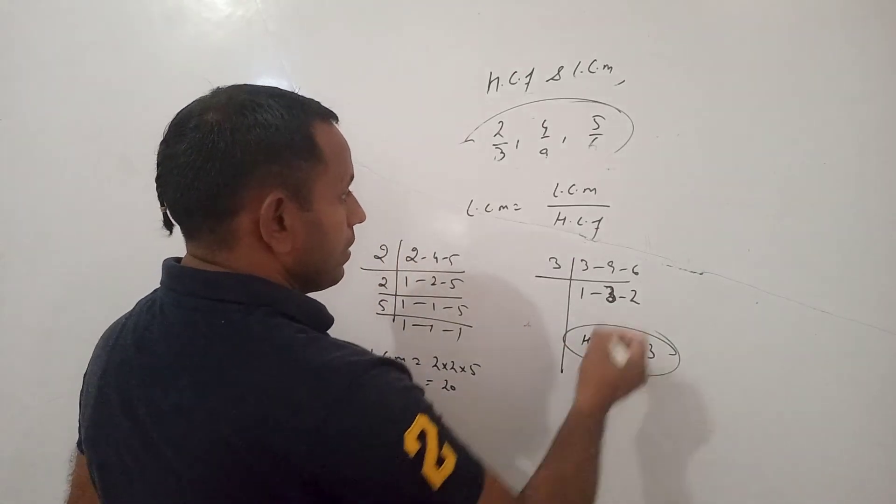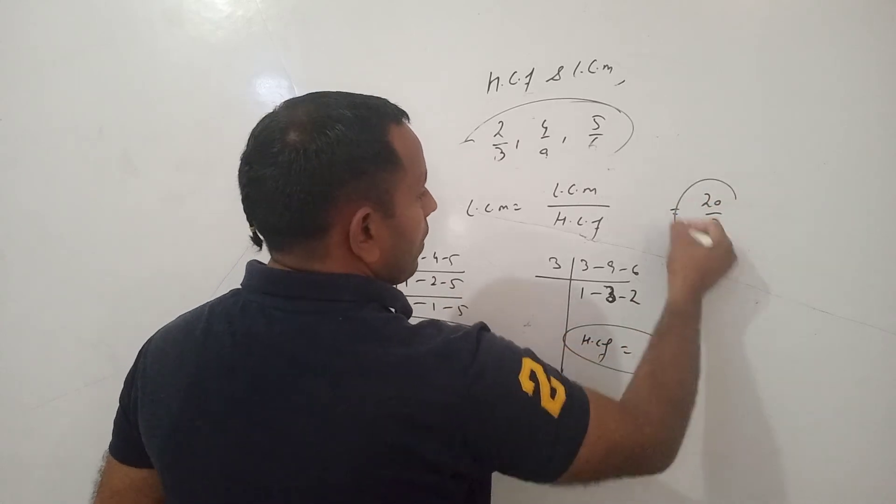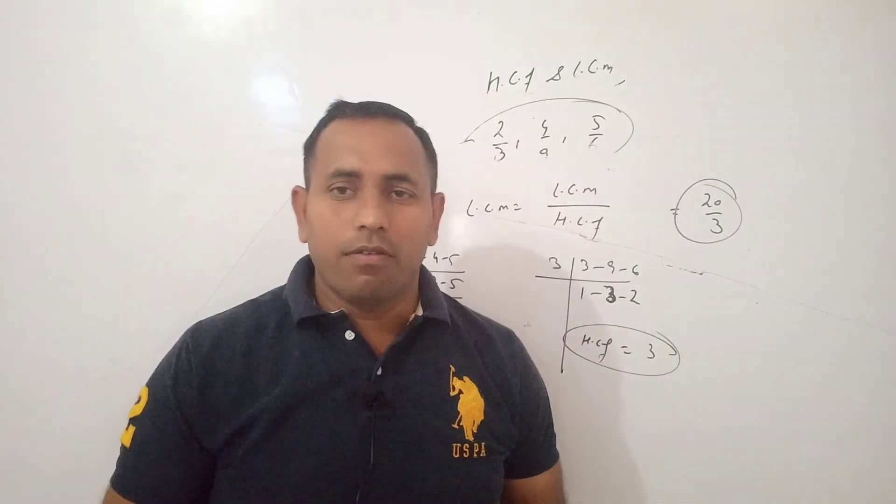So the answer is LCM upon HCF, it means 20 upon 3. That is the LCM of the number.